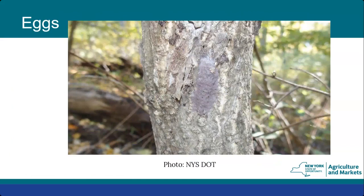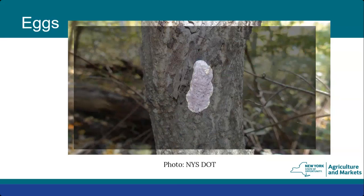Egg masses, which we're not seeing right now but will shortly, are very easily camouflaged — they look like a smear of mud or chalk. They sometimes get confused with spongy moth eggs, but spongy moth eggs look more like papier-mâché or cardboard, while spotted lanternfly eggs look more like putty or mud. Here you can see an egg mass in the center on an Ailanthus tree.